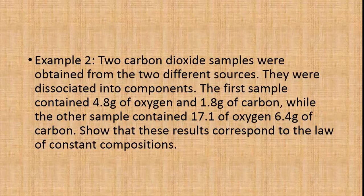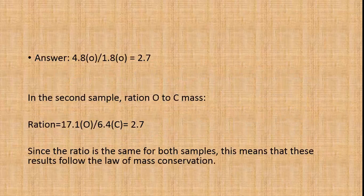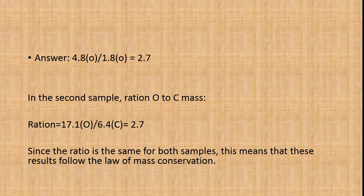Here is another example, which is quite different. Two carbon dioxide samples were obtained from two different sources and dissociated into components. The first sample contained 4.8 grams of oxygen and 1.8 grams of carbon, while the second sample contained 17.1 grams of oxygen and 6.4 grams of carbon. Show that these results correspond to the law of constant compositions. In this example, we divide instead of add: 4.8 ÷ 1.8 = 2.7 for the first sample, and 17.1 ÷ 6.4 = 2.7 for the second. Since the O to C mass ratio is the same for both samples, the results follow the law of constant compositions.